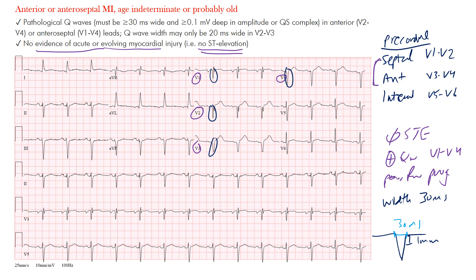No evidence of the ST segment elevation injury pattern, localizing to V1 through V4. We also mentioned poor R wave progression — normally from V1 to V4 or V5 there should be an increase in R wave amplitude and an increase in the R-to-S ratio. In this example there is pretty much absence of R waves, with R waves only starting to appear around V4 to V5, which is quite late.